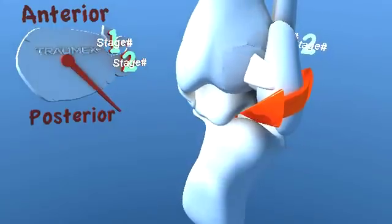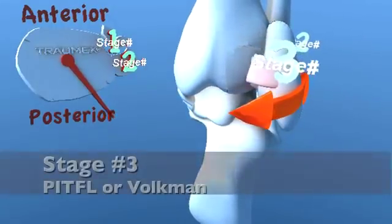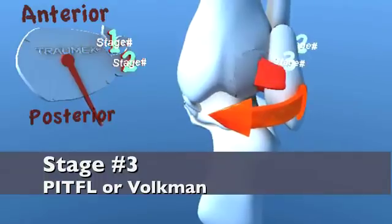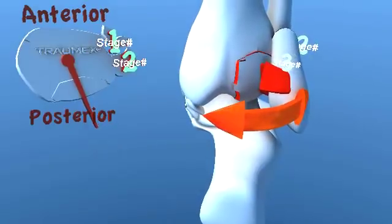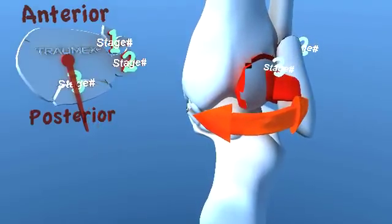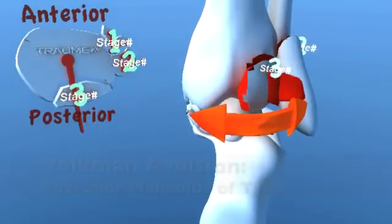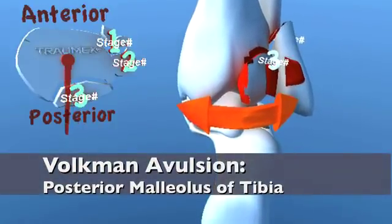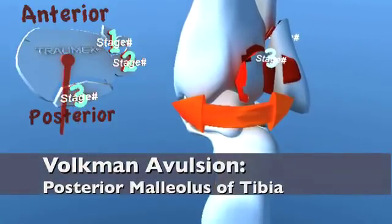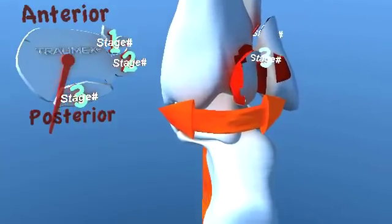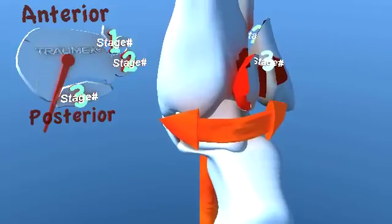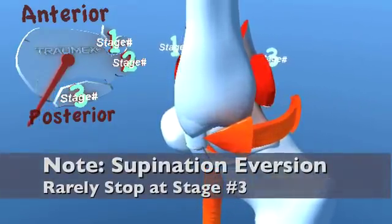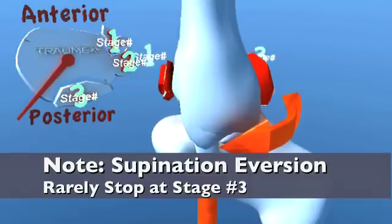As the force progresses, a stage 3 injury will either involve a rupture of the posterior tibial fibular ligament or a fracture of the posterior malleolus of the tibia, also known as Volkman's fracture. Supination external rotation injuries that reach stage 3 rarely stop at this point and usually progress to the final stage.